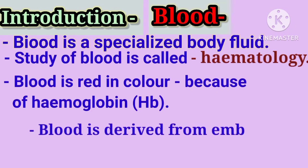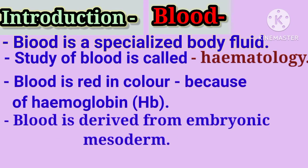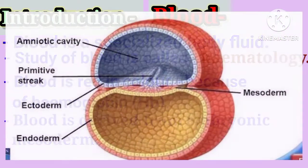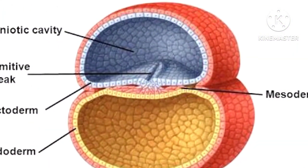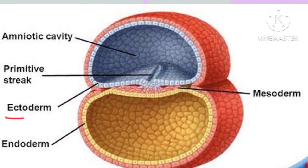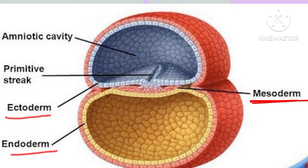Blood is derived from embryonic mesoderm. During embryonic development, three layers form: ectoderm, mesoderm, and endoderm. From these three layers, different organs of the human body are formed. In the same way, blood is formed from the mesoderm.